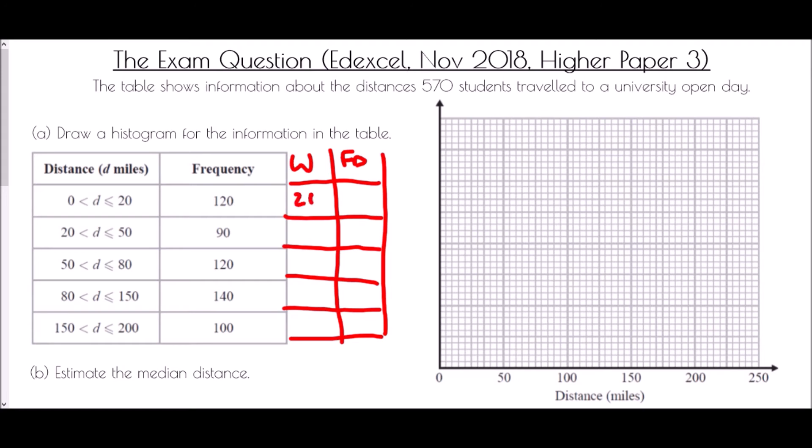So we've got our group width, we have our frequency density. The width in the first case is from 0 to 20 which is a width of 20, 20 to 50 which is a width of 30, 50 to 80 which is a width of 30, 80 to 150 which is a width of 70, and 150 to 200 which is a width of 50. Then what we need to do is divide our frequency by that group width in order to find the frequency density.